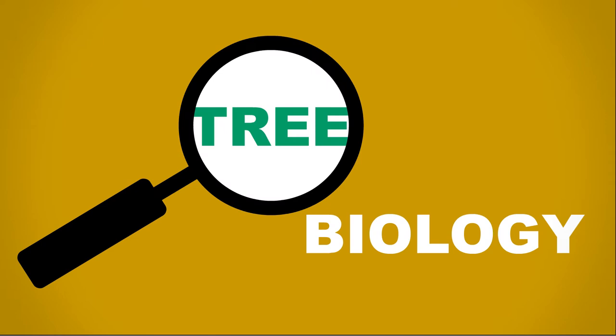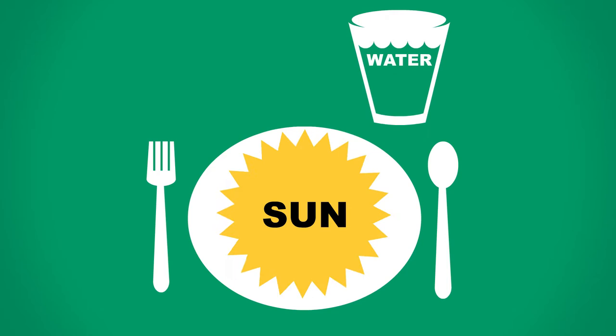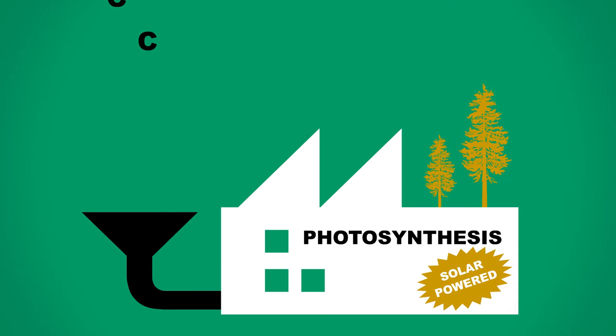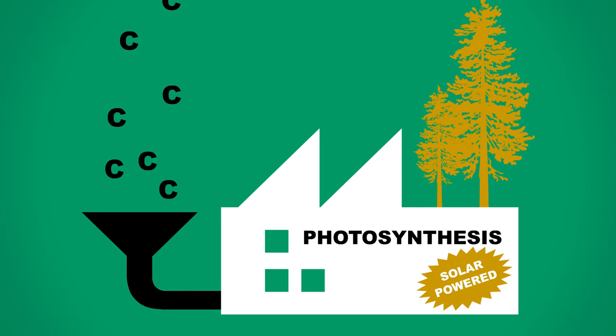Trees, like all plants, need sunlight to grow, along with water and nutrients. They use the sunlight to make their own food through photosynthesis. For this process, the tree takes some carbon dioxide from the air and uses it to grow bigger and stronger, releasing oxygen in the process.